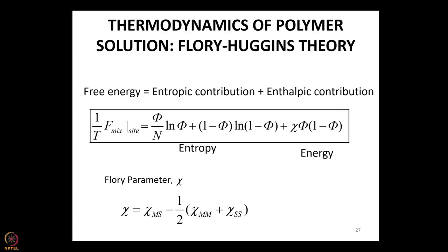In the polymer case, however, one has to take account of the fact that a polymer consists of many monomers. The first term in the free energy accounts for that, where phi is the volume fraction, through which the size of the polymer enters. The chi parameter, the Flory-Huggins interaction parameter, is exactly the same as in binary mixtures — the non-ideality parameter we know from the breakdown of Raoult's law.